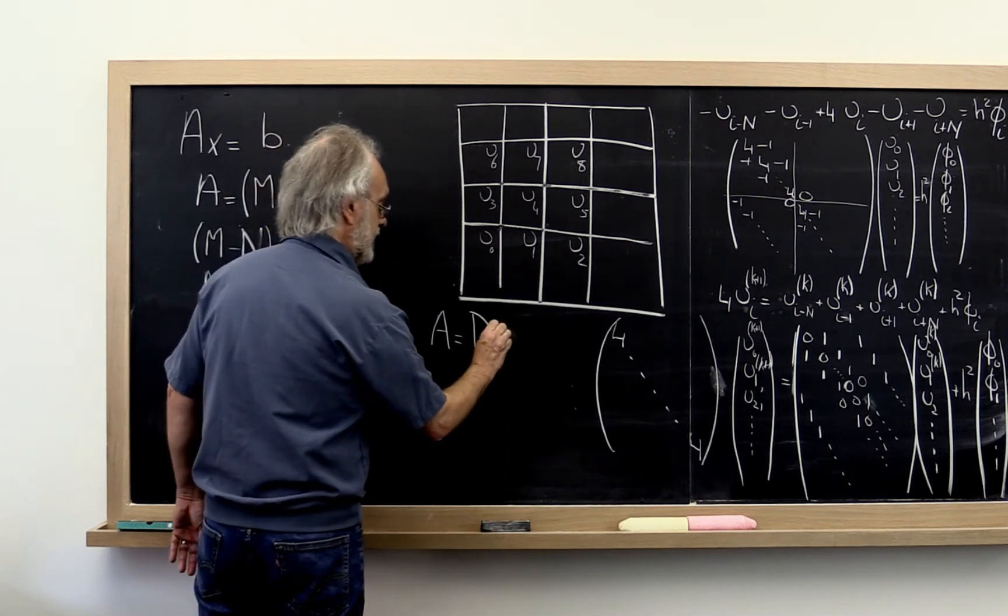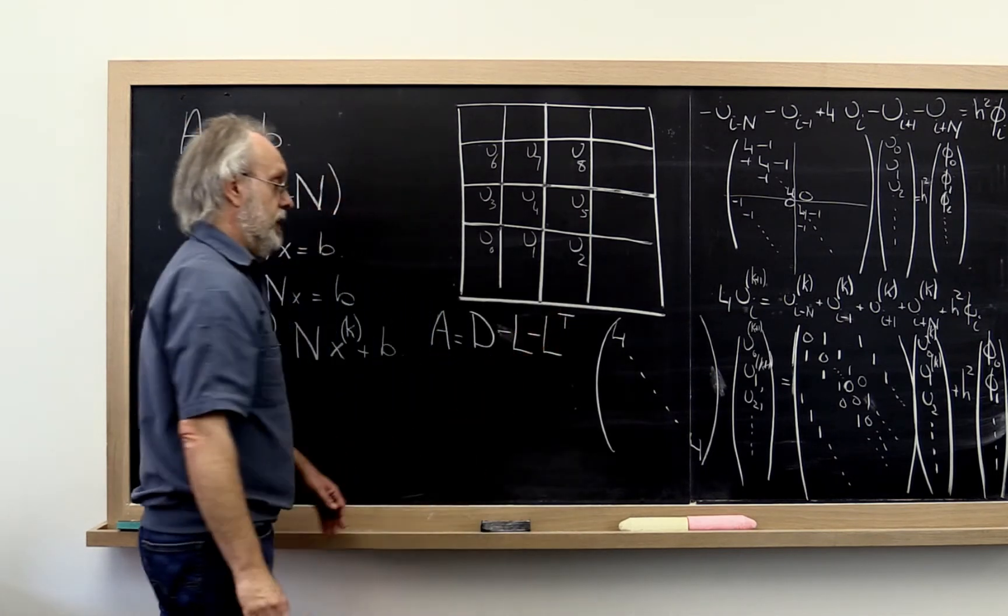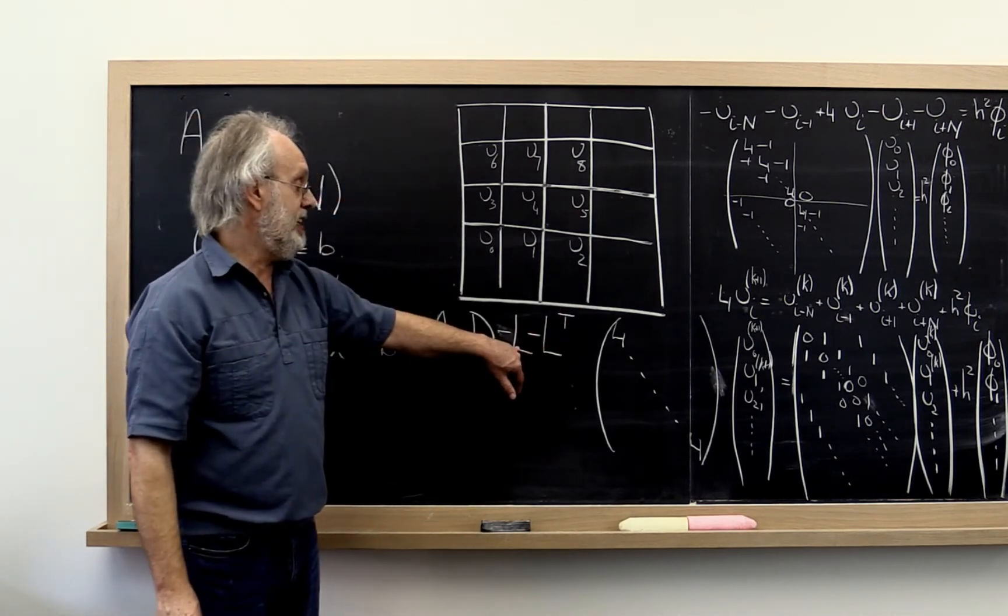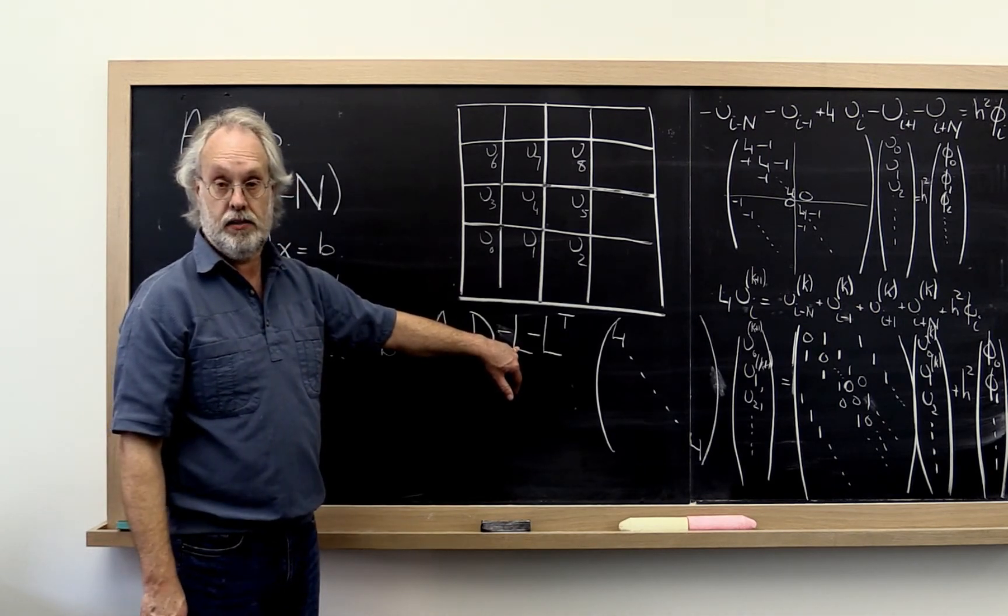And we can say that, it's actually minus L minus L transpose. It's a symmetric matrix and we'll let L be the negative of the strictly lower triangular part. Then we get this.